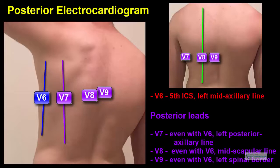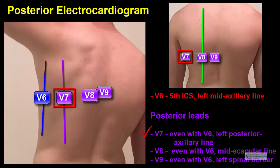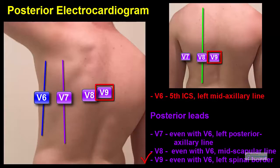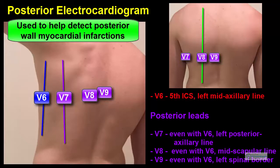Posterior leads, also referred to as leads V7, V8, and V9, are typically placed on the left posterior chest. All are placed in the same horizontal line as leads V4 through V6. Lead V6 can be used as a reference point for this horizontal plane. V7 is placed at the left posterior axillary line, V8 is placed at the mid-scapular line, and V9 is placed at the left spinal border. The posterior leads can be used to help detect posterior wall myocardial infarctions.